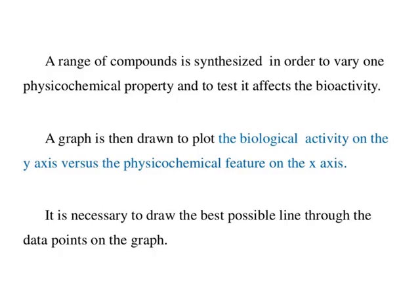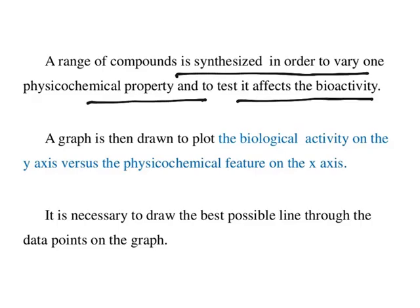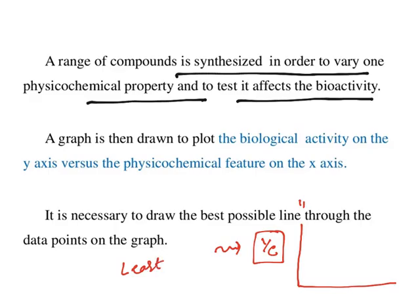A range of compounds are synthesized to vary one physical chemical property and test its effects on biological activity. On the y-axis, biological activity is taken as 1/C — the inverse of concentration — because the best drugs show maximum effect at the least concentration. On the x-axis, log P values or whatever physical chemical property is plotted. As log P increases, you record the corresponding biological activity for each compound, and a line is drawn covering all these data points, from which a particular equation is deduced.